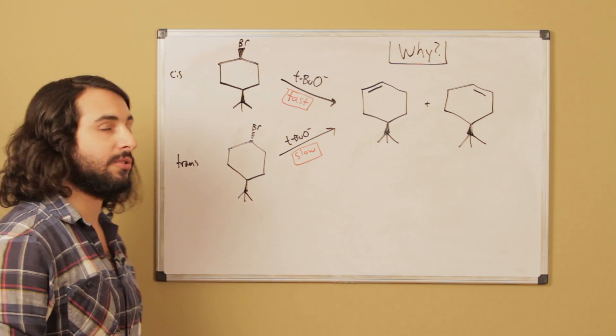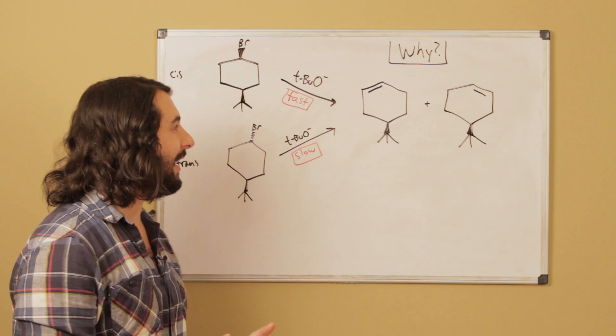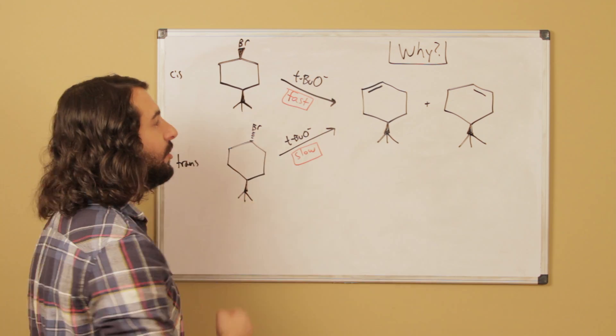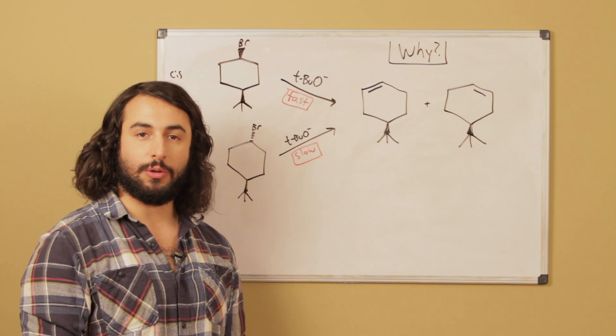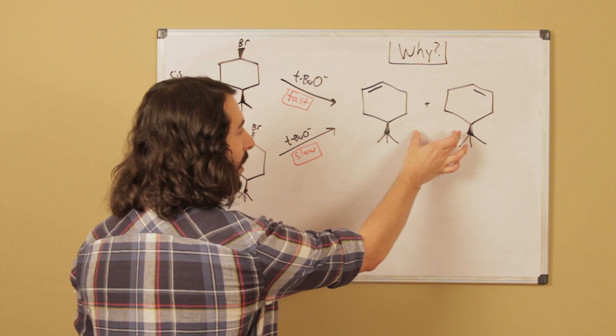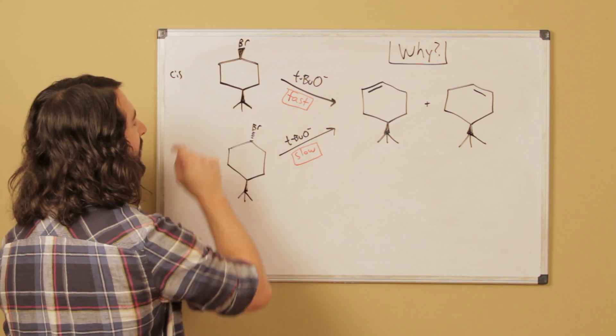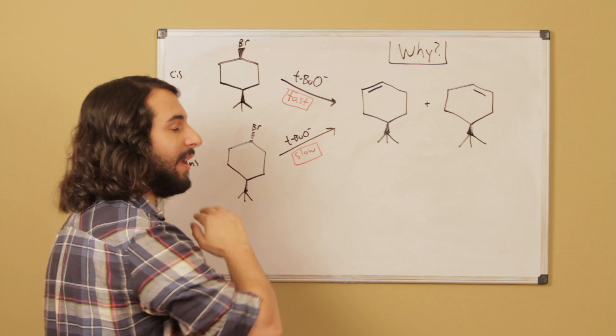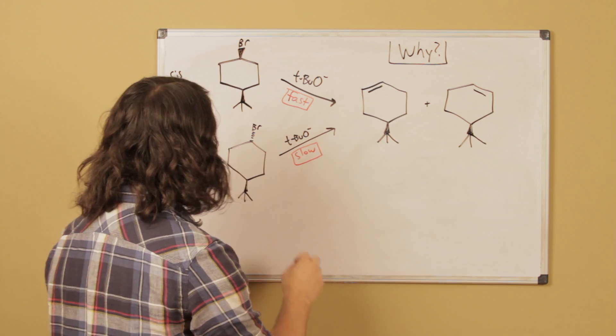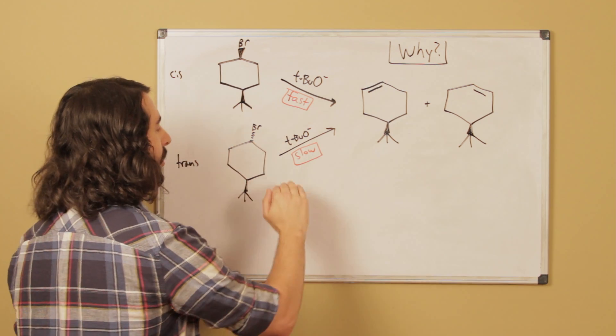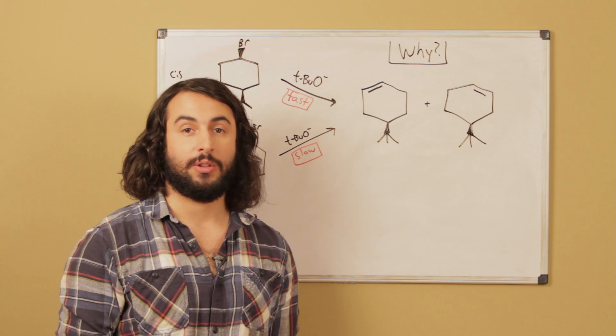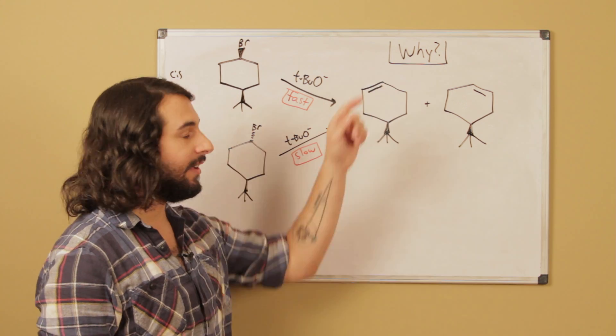And on this compound those are trans. Now what we're looking at is that both will undergo E2 elimination with tert-butoxide to form these two products. However, from the cis compound the reaction is very fast, and from the trans isomer the reaction is very slow. And the question is simply, why?